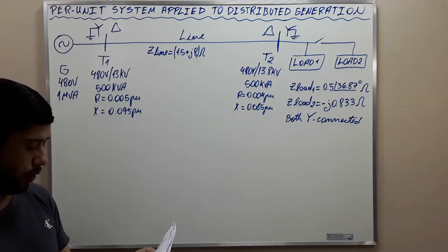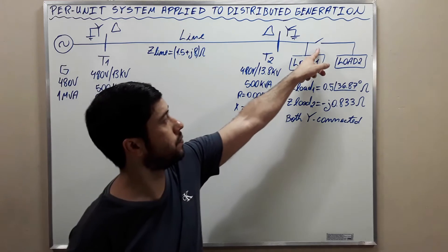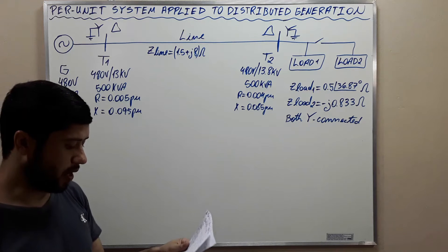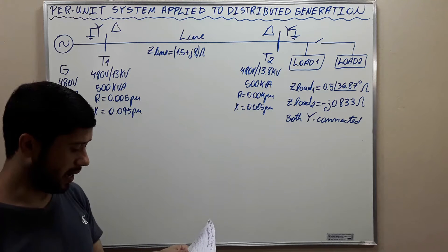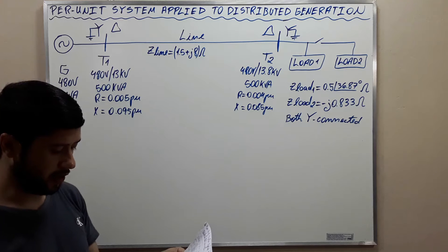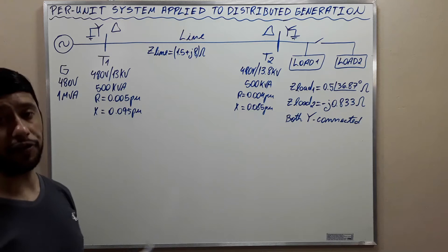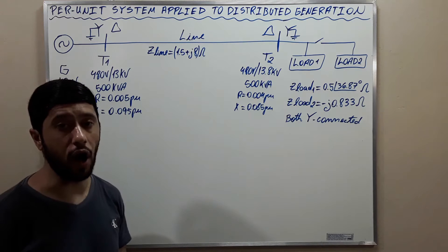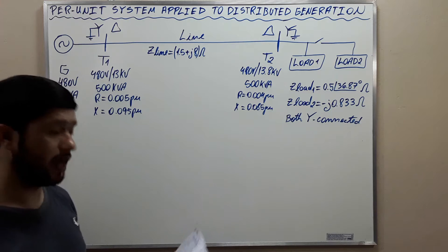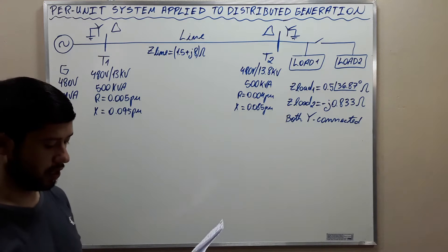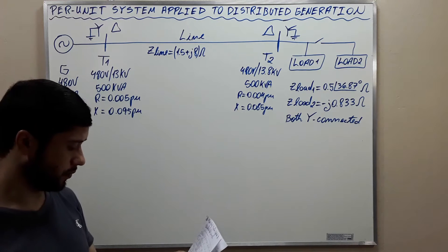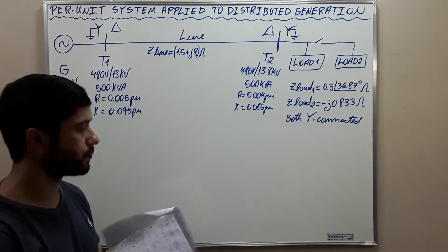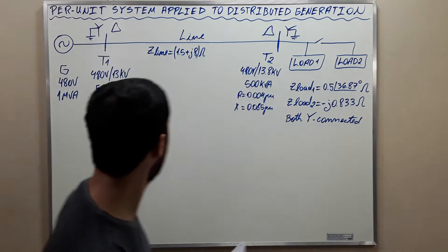Letter B: with the switch open, find the complex power supplied by the generator. What is the power factor of the generator? At what percentage of its full rated power is the generator loaded? Letter C: with the switch closed, recalculate all parameters of letter B. And letter D: calculate the line losses with the switch open and closed. What is the effect of adding load 2 to the system? Okay my friends, let's solve it.